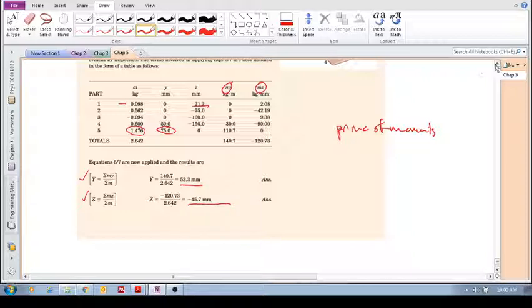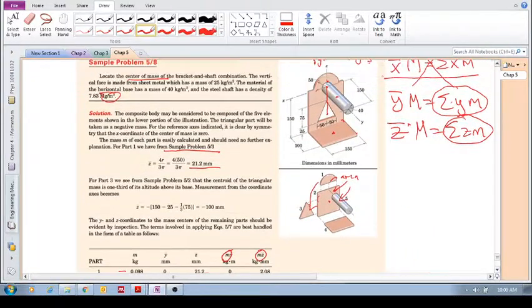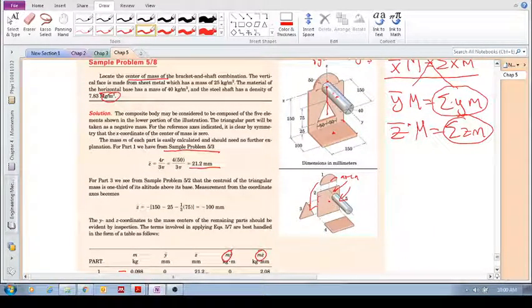So 53.3 and minus 45.7. So where is it? It's somewhere there and then down over here. So there is our centroid, our center of mass. So again, if we hang something over that, if you take a cable and you wrap it around here and you hang it right over the center of mass.